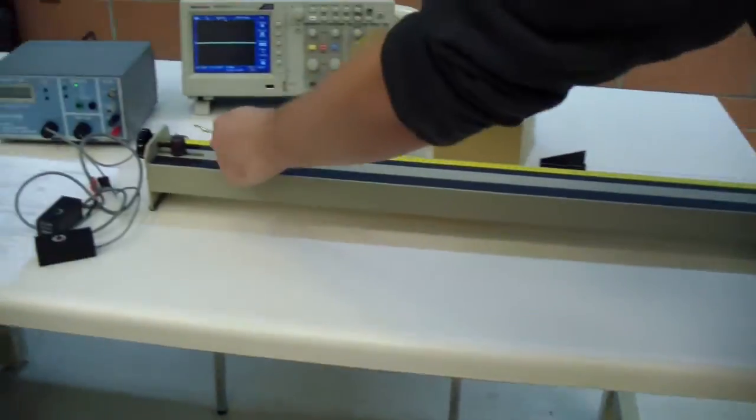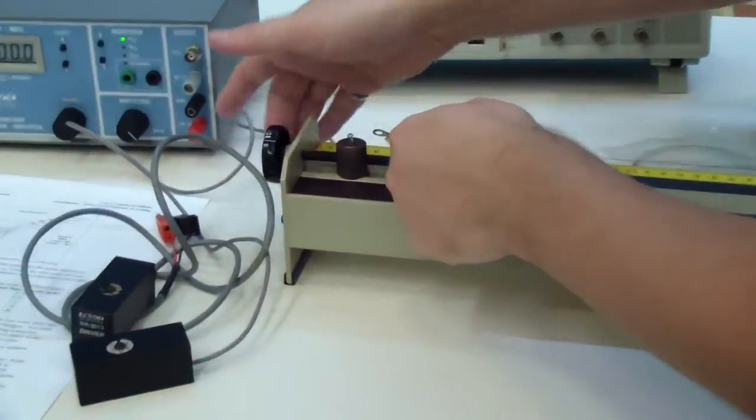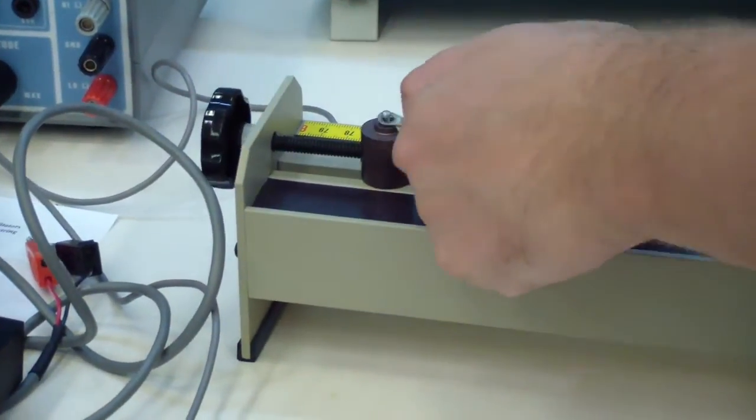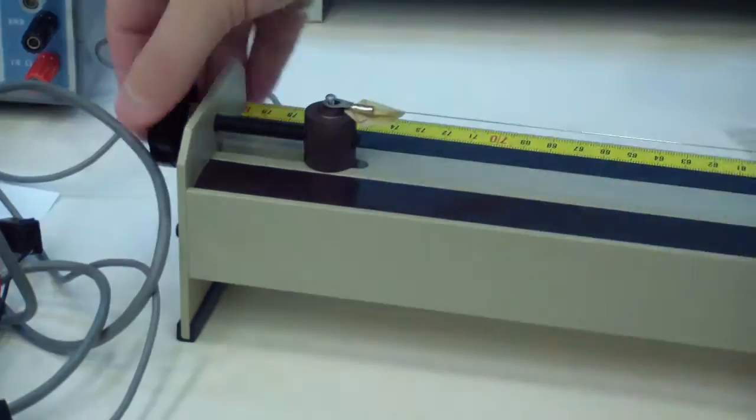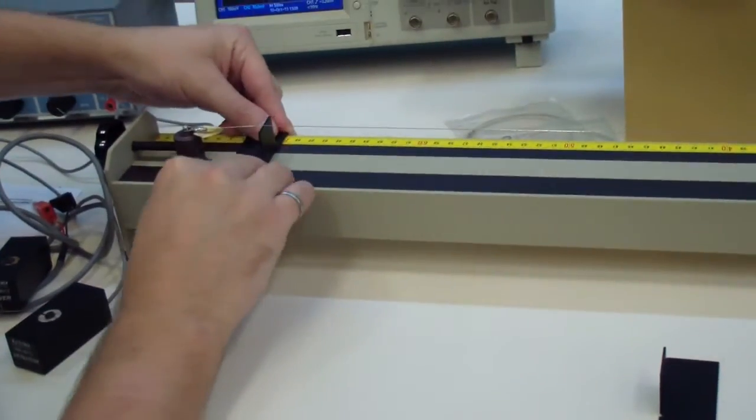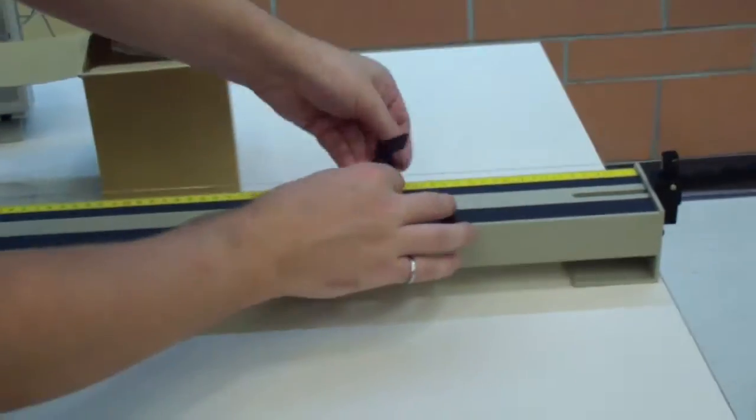Choose a guitar string and attach it to the device as shown. Tighten the thumb screw until the tensioner is parallel to the floor. Insert the bridges as shown, approximately 60cm apart.